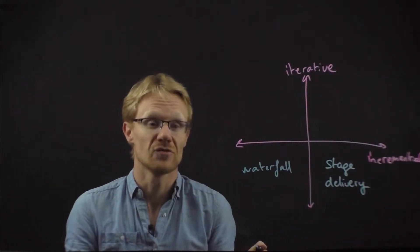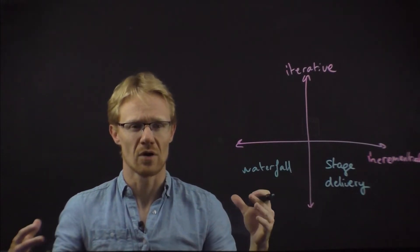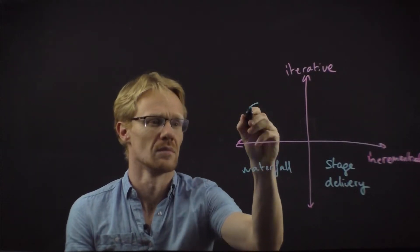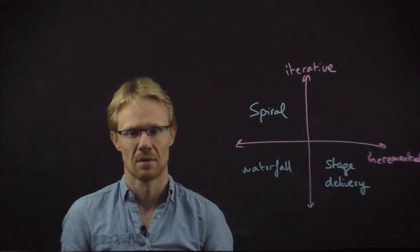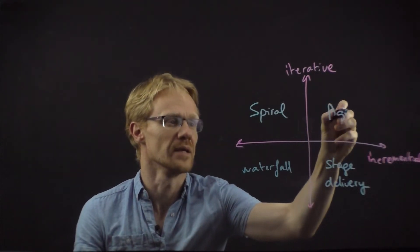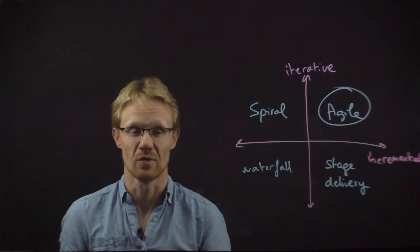If you're iterative but not incremental, so you're doing lots of iterations where you work on everything at the same time, that would be the spiral model. Finally, if you're both iterative and incremental, that's where agile really lives. And that's what I want to explore even more now.